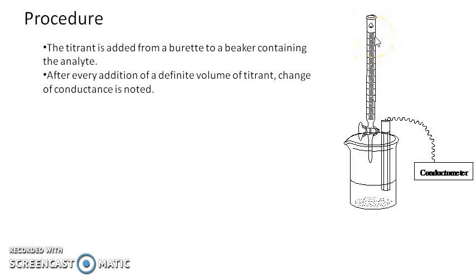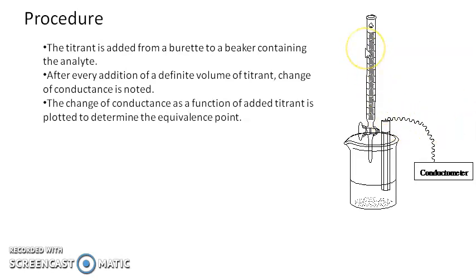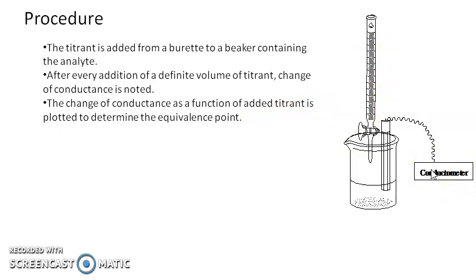Add the titrant from the burette into the beaker in increments of 0.5 mL or 1 mL, stir it well using a glass rod, measure the conductance from the conductometer, and note it down. Keep adding the titrant and after every addition determine the conductance. The smaller the volume of titrant added per increment, the more accurate the result will be.